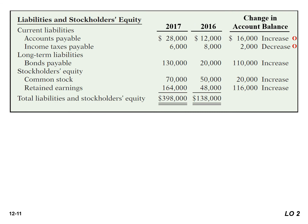We have an increase in both bonds payable and common stock — think of these as financing activities. How did we choose to finance our operations? Did we issue debt in the form of bonds payable, or did we issue stock? And lastly, retained earnings is mixed — it contains both an operating activity and a financing activity. Net income is an operating activity, whereas the payment of dividends is considered a financing activity.